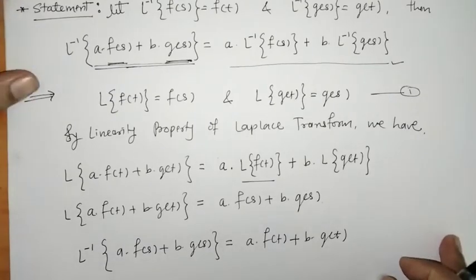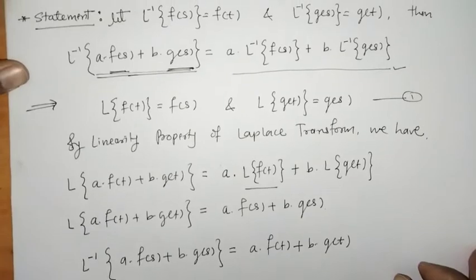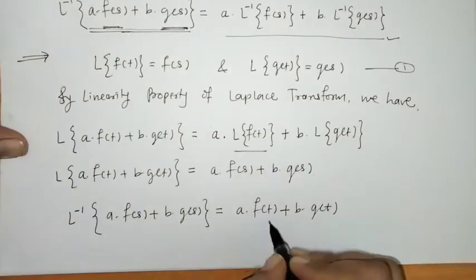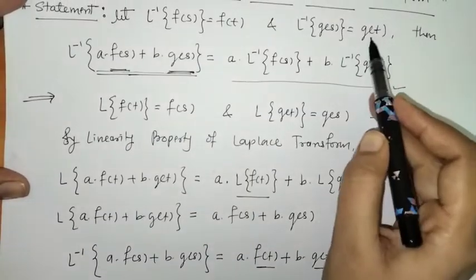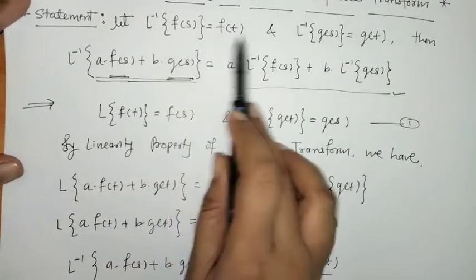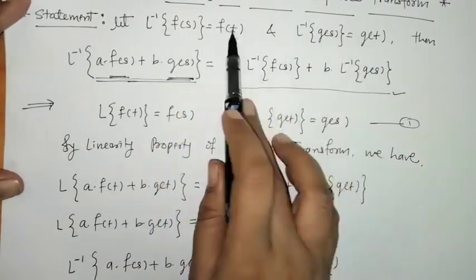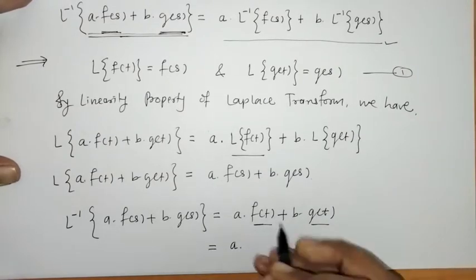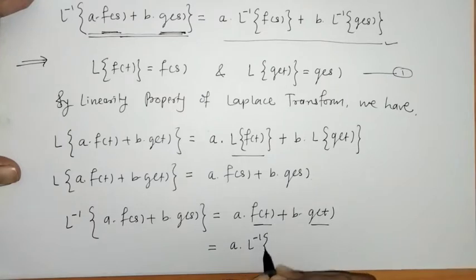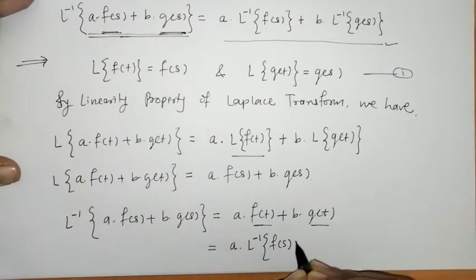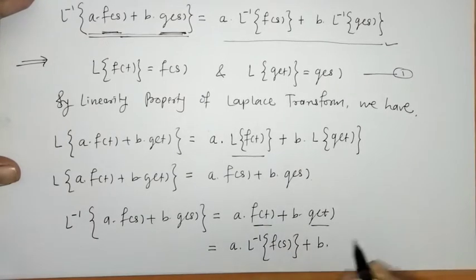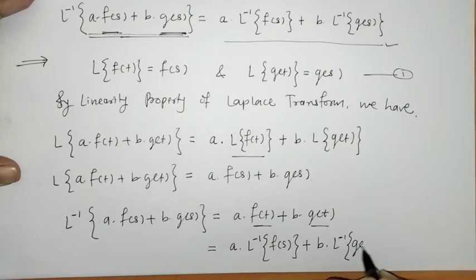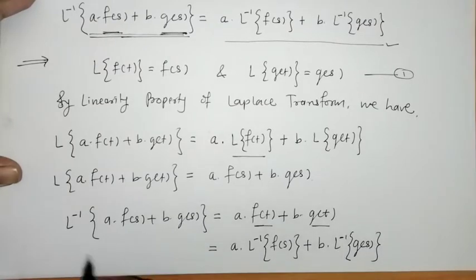Now substituting the values of f(t) and g(t) from our given conditions, we can write: L⁻¹{a·F(s) + b·G(s)} = a·L⁻¹{F(s)} + b·L⁻¹{G(s)}. So we have proved the linearity property of the inverse Laplace transform.